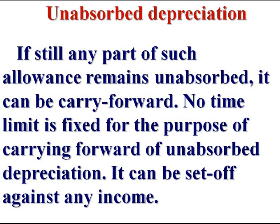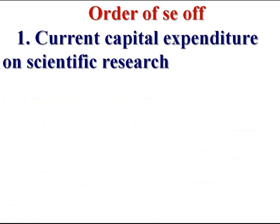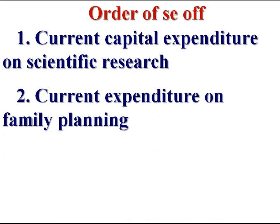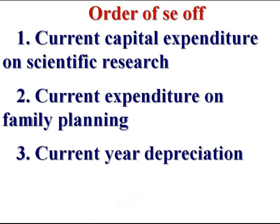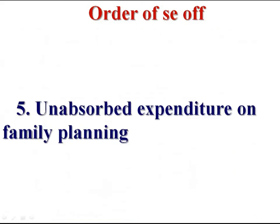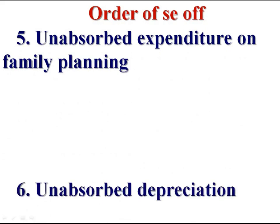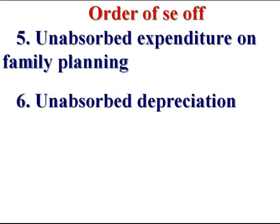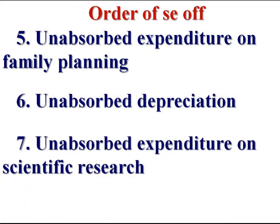The sequence or order of set-off is: first, current capital expenditure on scientific research; second, current expenditure on family planning; third, current year depreciation; fourth, brought forward business loss; fifth, unabsorbed expenditure on family planning; sixth, unabsorbed depreciation; seventh, unabsorbed expenditure on scientific research. This is the order of set-off.